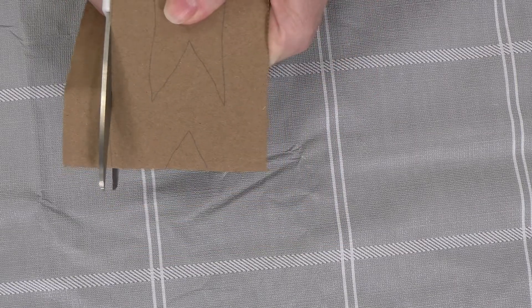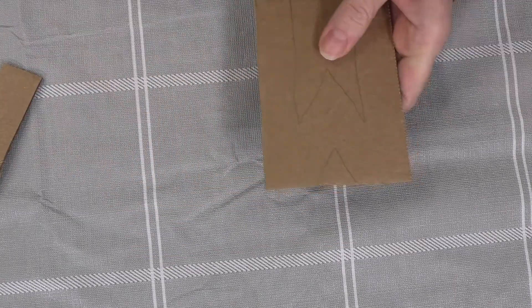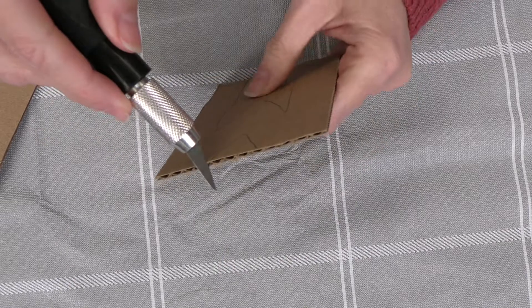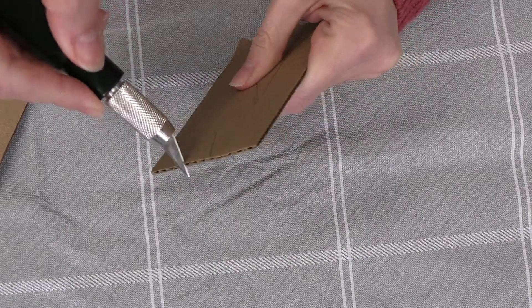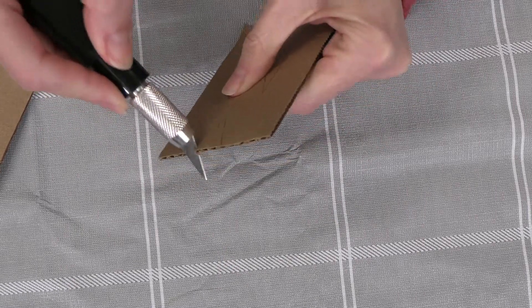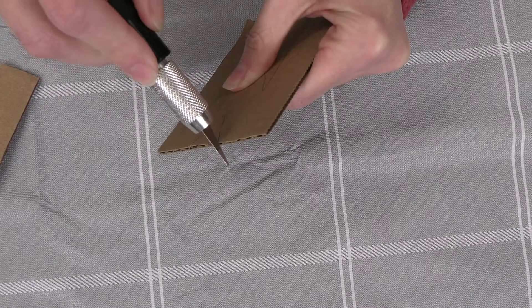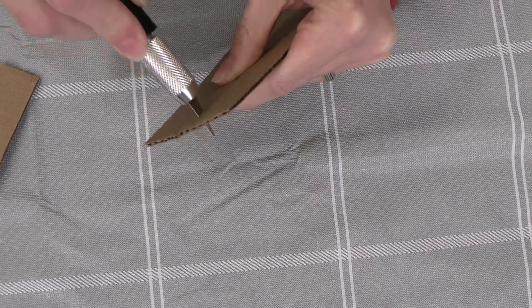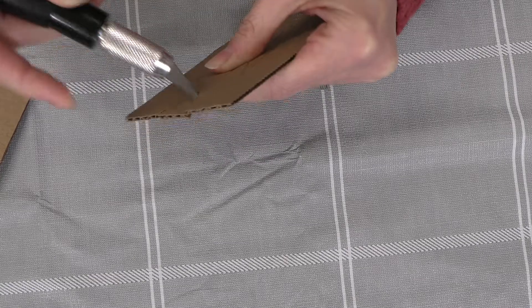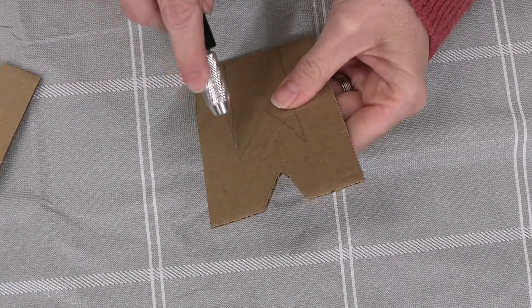So then you're going to cut your shape out of your cardboard. I find it easier personally to use an exacto knife with cardboard. It's such a thick material that I find the exacto knife allows it to be easier to utilize. So I'm going to finish cutting out my M.